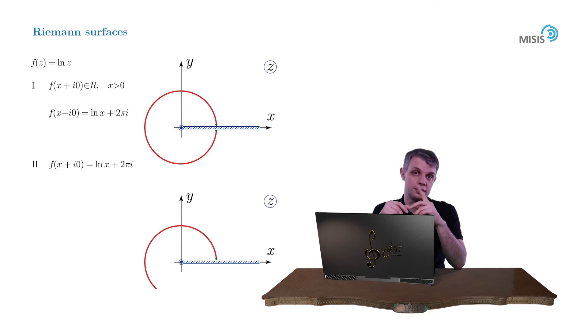Again we may rotate in the counterclockwise direction, arrive at the lower bank of the branch cut, and the function attains a value log of x plus 4πi this time. But pay attention now: the value of our second regular branch on the upper bank coincides with the value of our first regular branch on the lower bank of the first complex plane.